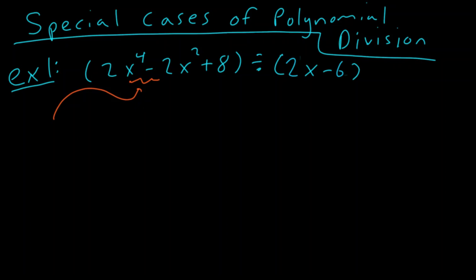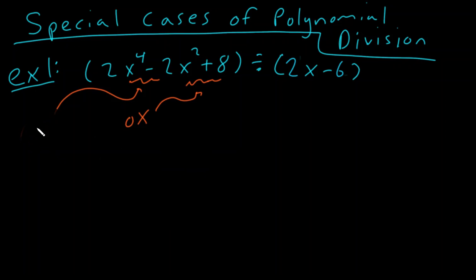If you said that there's no x cubed, you would be 100% right. And when there's no x cubed, what it means is there's actually a 0x cubed in there. And similarly, we have the same thing here — there is a 0x that is missing, in between the negative 2x squared plus 8. So how do we account for something like this whenever we have missing components? The way you want to do that is you actually want to use a 0 as a placeholder.